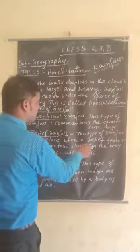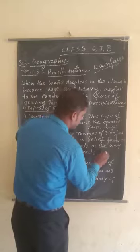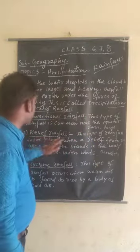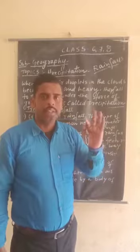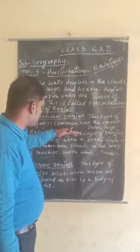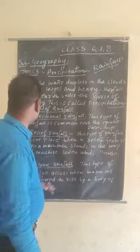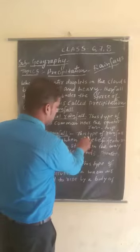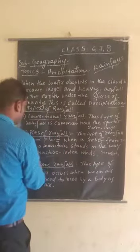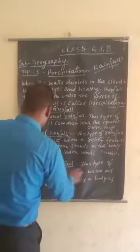The second is relief rainfall. This type of rainfall takes place when a relief feature like a mountain stands in the way of moisture-laden wind — that is, the monsoon wind. The Himalayas are a great barrier to rainfall. When moisture-laden winds come from the Bay of Bengal and strike the Himalayas as a barrier, very heavy rainfall occurs there, mostly in June and July.